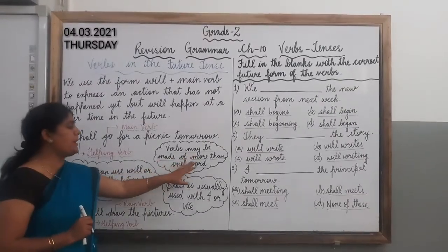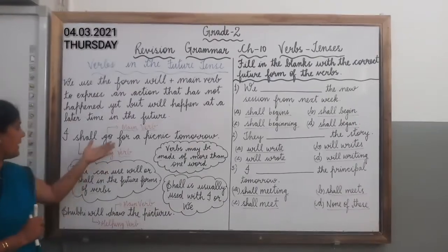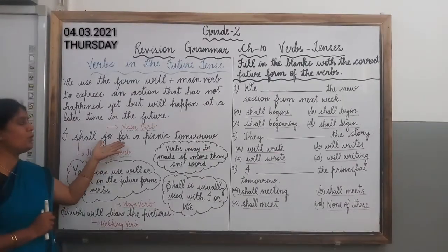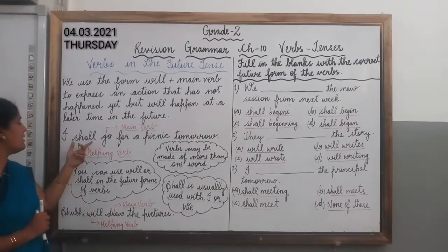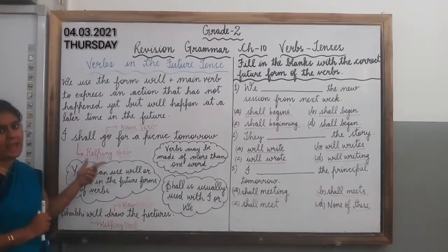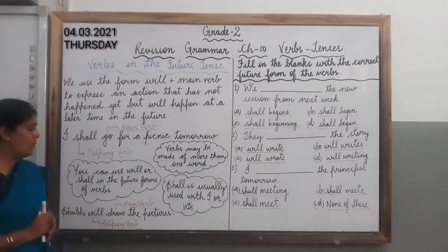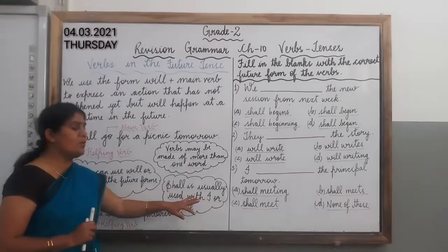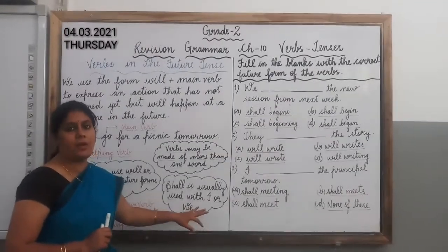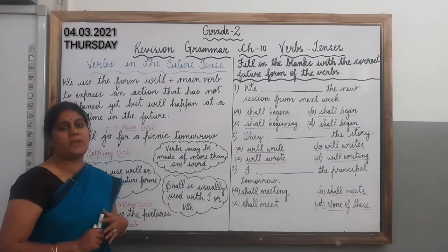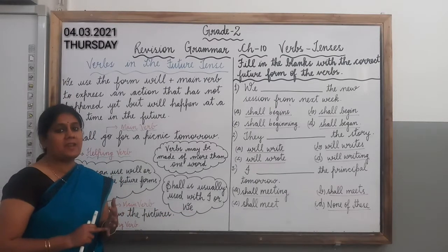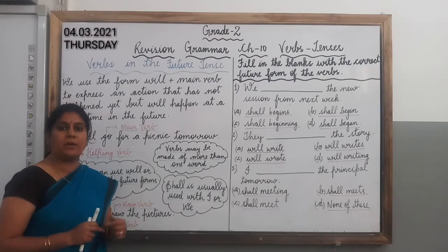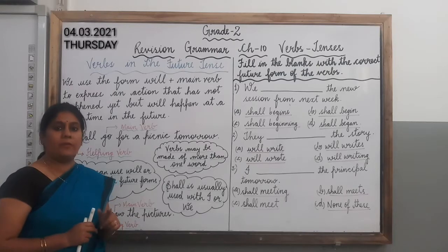Verbs may be made up of more than one verb. Here you can see 'shall' and 'go' — two verbs are there. 'Shall' is the helping verb and 'go' is the main verb. So 'shall' will be used with the pronouns 'I' or 'we'. In other cases — with the pronouns 'he', 'she', 'it', and nouns in singular or plural number — you will use 'will' before the main verb.